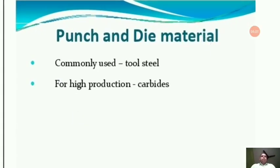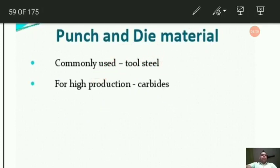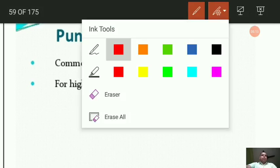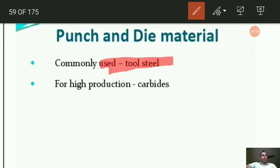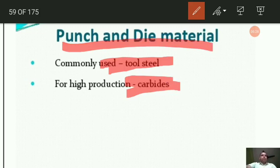One more important point: punch and die materials. You must take note as these are very important for MCQ purposes. The most commonly used material for punch and die are tool steels. For high production, carbides are used.